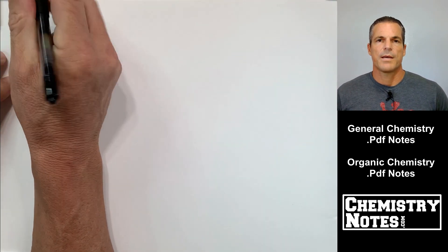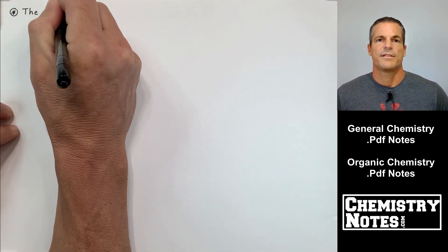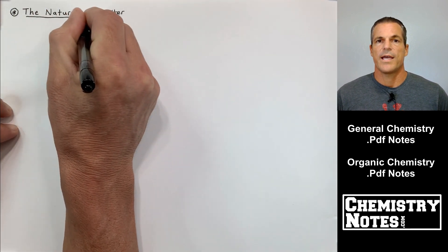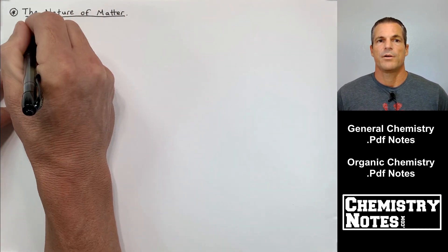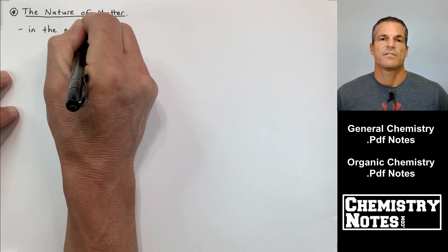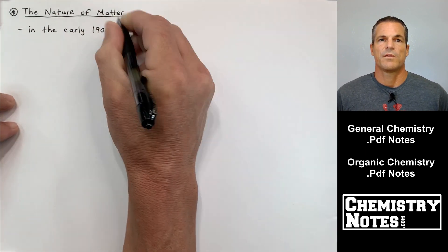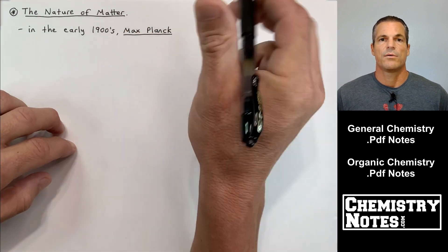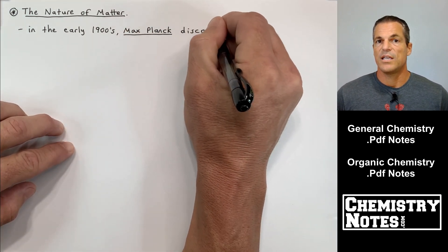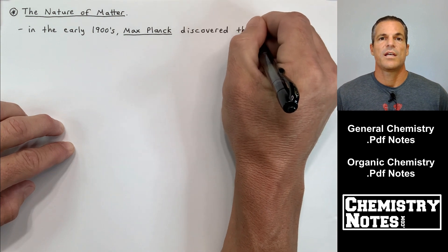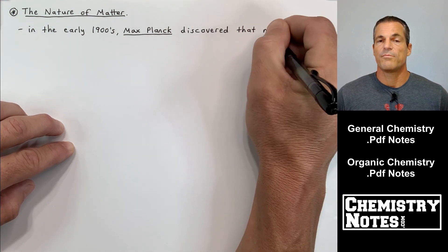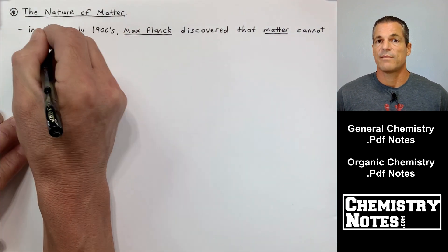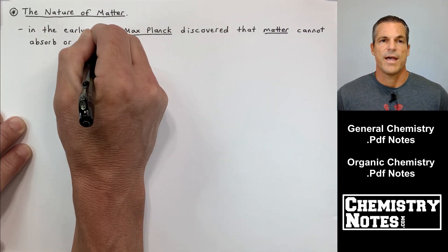Hi everybody, Justin here from chemistrynotes.com and this is our second video on section 7, the quantum mechanical view of the atom and periodicity. In the last video we talked about some of the properties of light and how light can travel as a wave and how light has a frequency and a wavelength. Today we're going to start to explore the wave-particle duality of light. Before we do that we first have to have some background on the nature of matter.